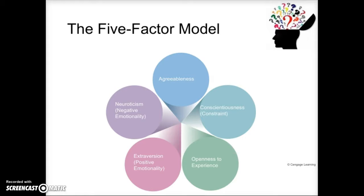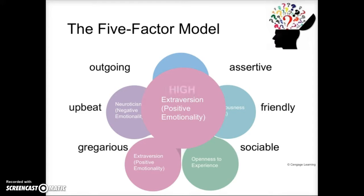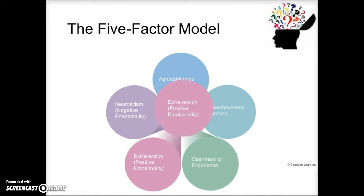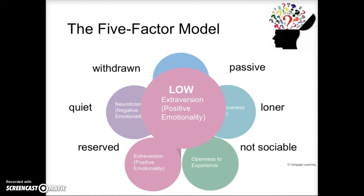Our next trait is extroversion, also known as positive emotionality. People high on this trait tend to be very friendly, gregarious, upbeat, outgoing, sociable, and assertive — the person who, in a group of strangers, will introduce themselves to everyone and start the conversation going. Somebody who is low on extroversion isn't unhappy, but they tend not to display a lot of external positive emotions, tending to be less sociable, more reserved, quiet, and withdrawn, and a little more passive.